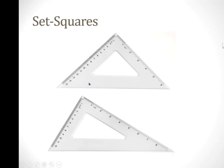We can use a pair of set squares. The first set square is a combination of 45, 90, and 45 degrees, and the other is a combination of 30, 60, and 90 degrees. Set squares are used to draw parallel lines and perpendicular lines.